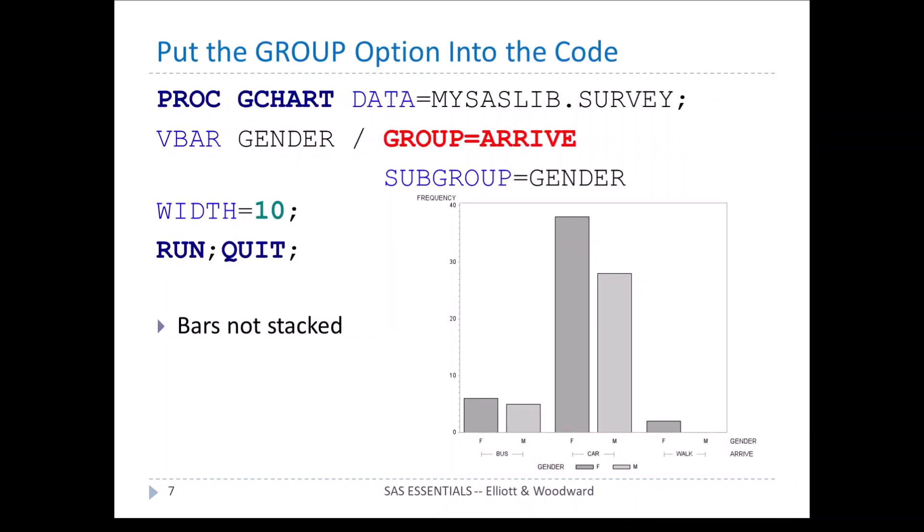Let's put the group option back in the code just to see how that would affect things. You can see here in red, I put group equal arrive back into the code and rerun it. Now the bars are not stacked anymore, but instead they're side by side.